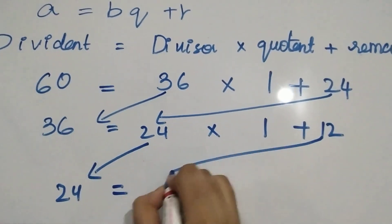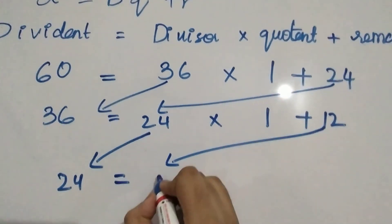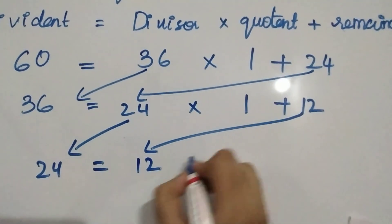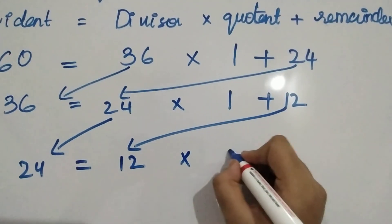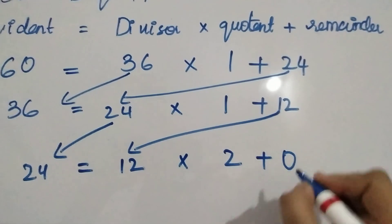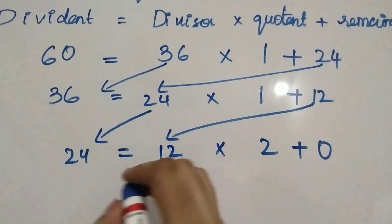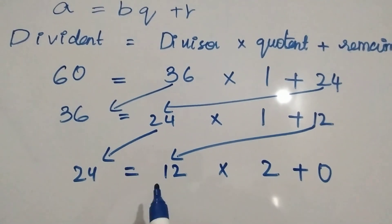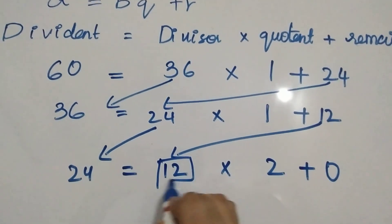24 is equal to 12 into 2 plus 0. 12 becomes the next divisor and it goes two times and the remainder is zero. So the HCF is the divisor which is 12.